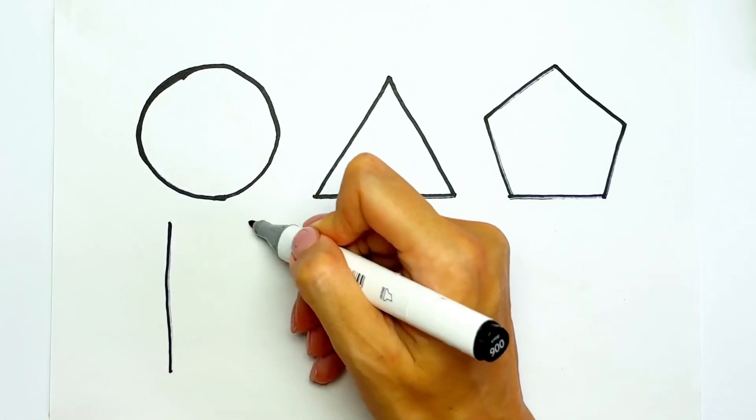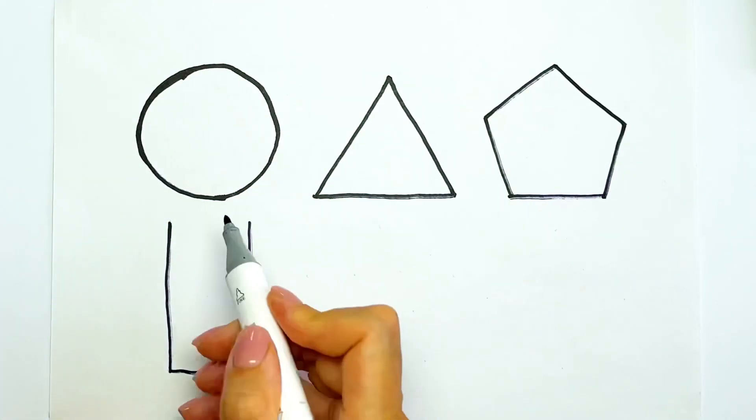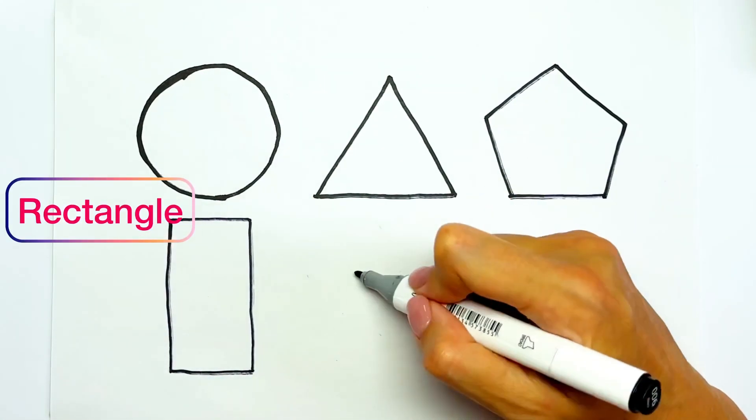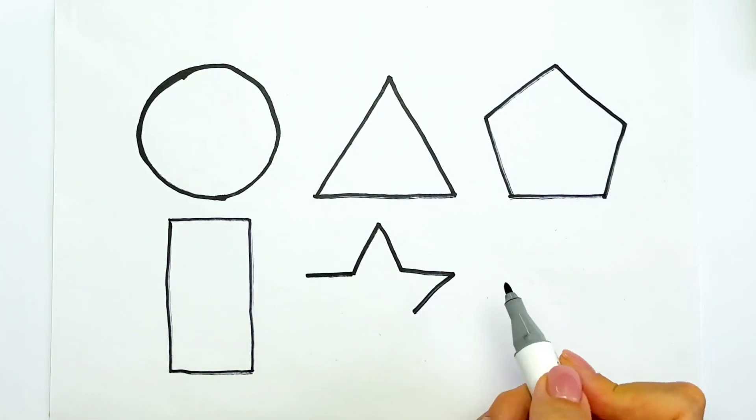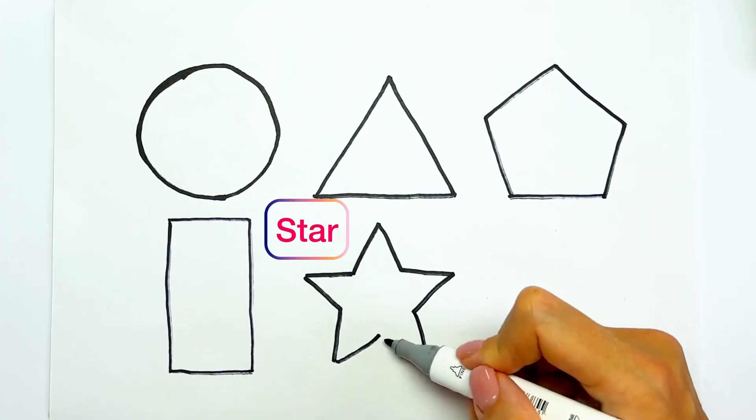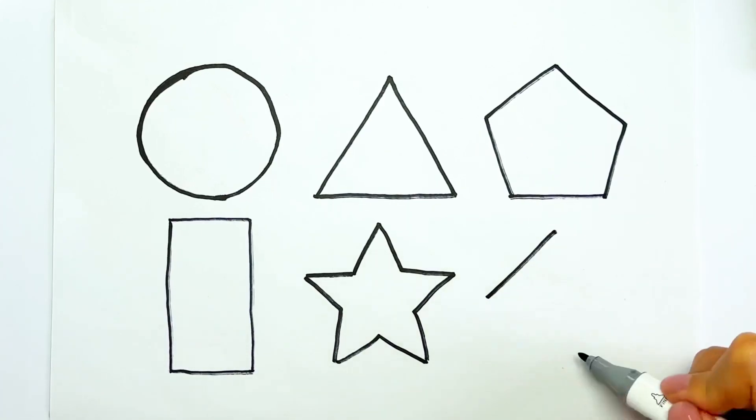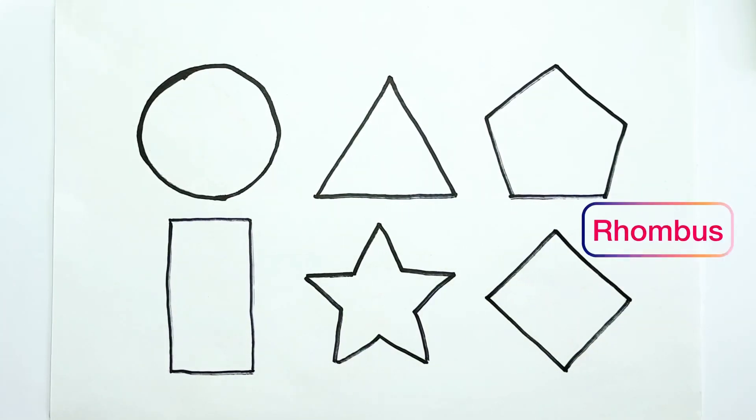The next one is rectangle. Rectangle has two long sides. Star. And rhombus. Rhombus is like a square but extending in one angle.